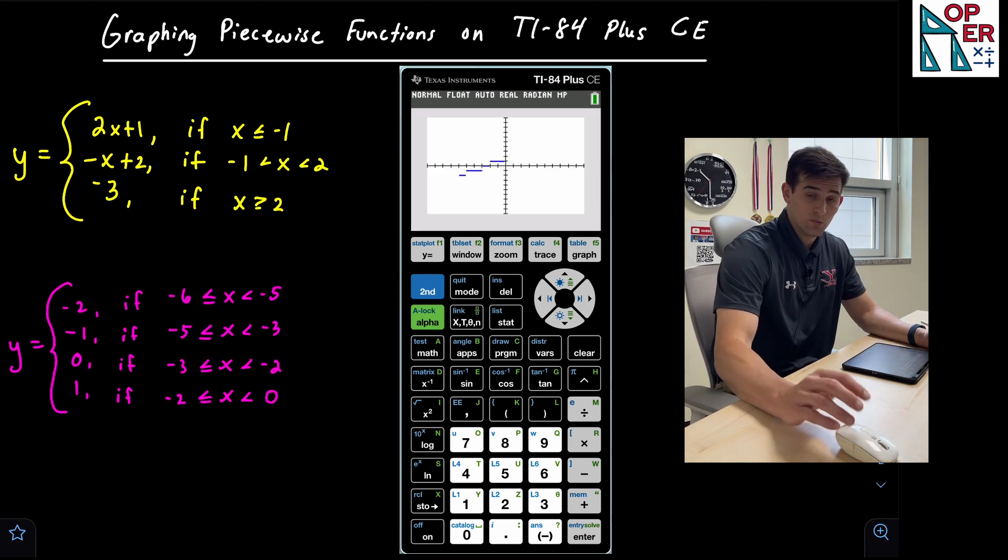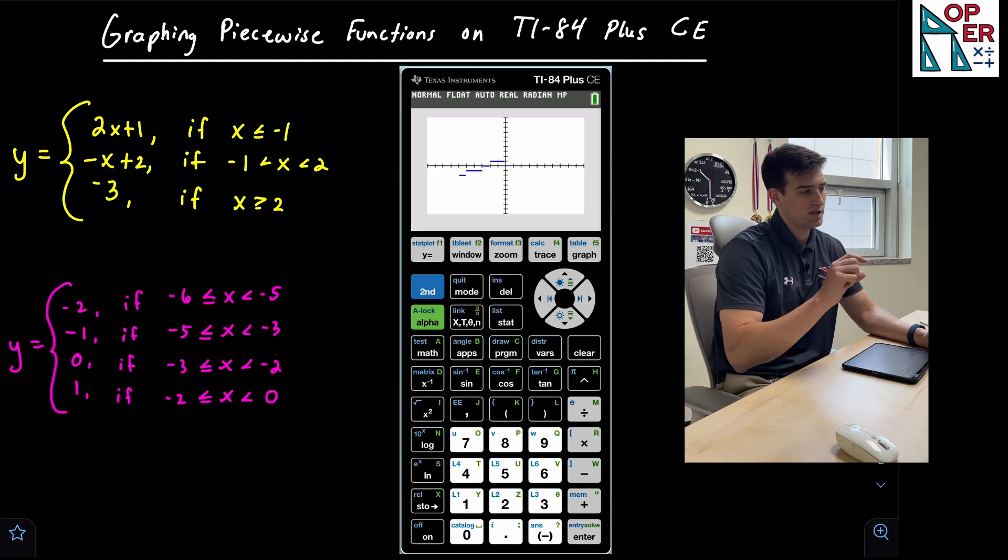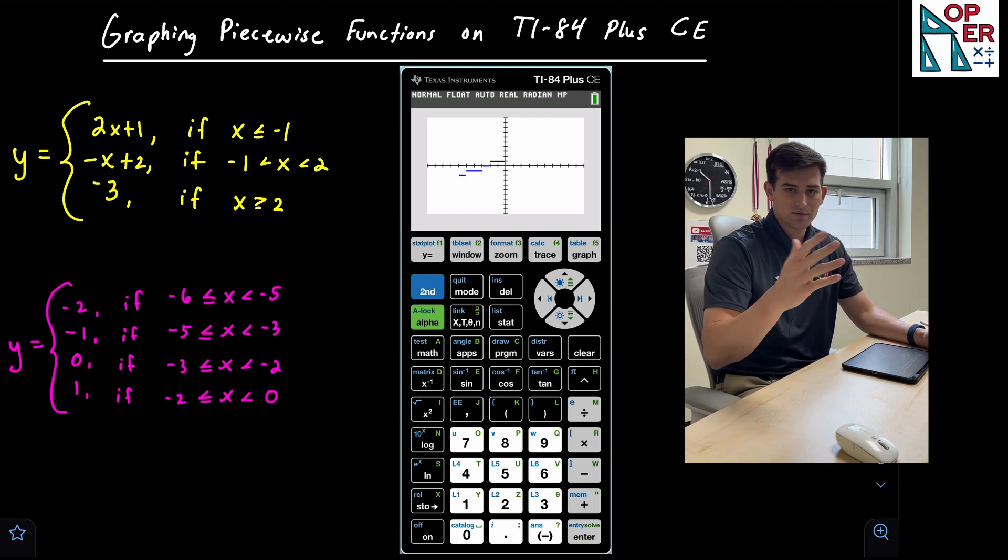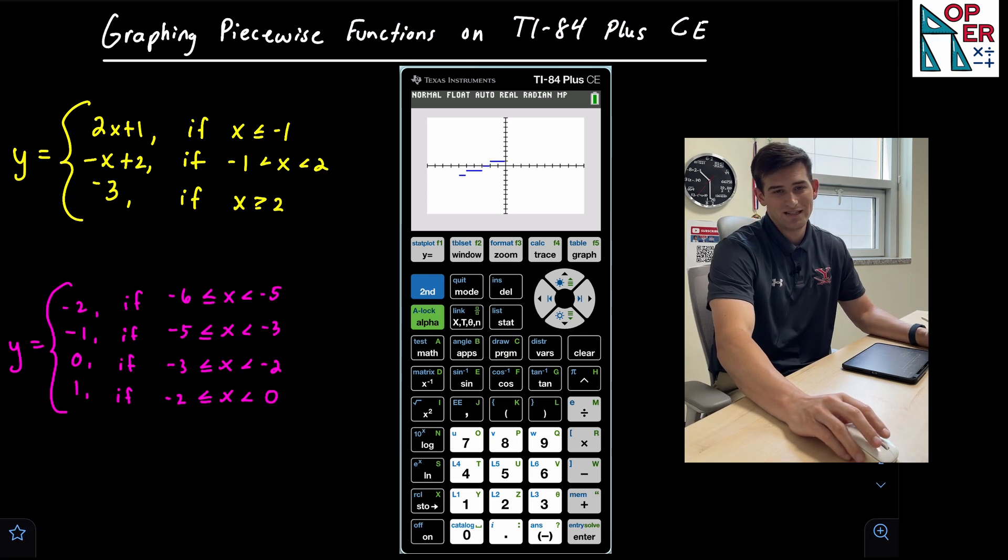And notice how we have our four pieces, but it's called a step function because those are just horizontal segments, and it looks like a series of steps. Okay, so that's how you can graph piecewise functions on the TI-84 Plus CE graphing calculator.